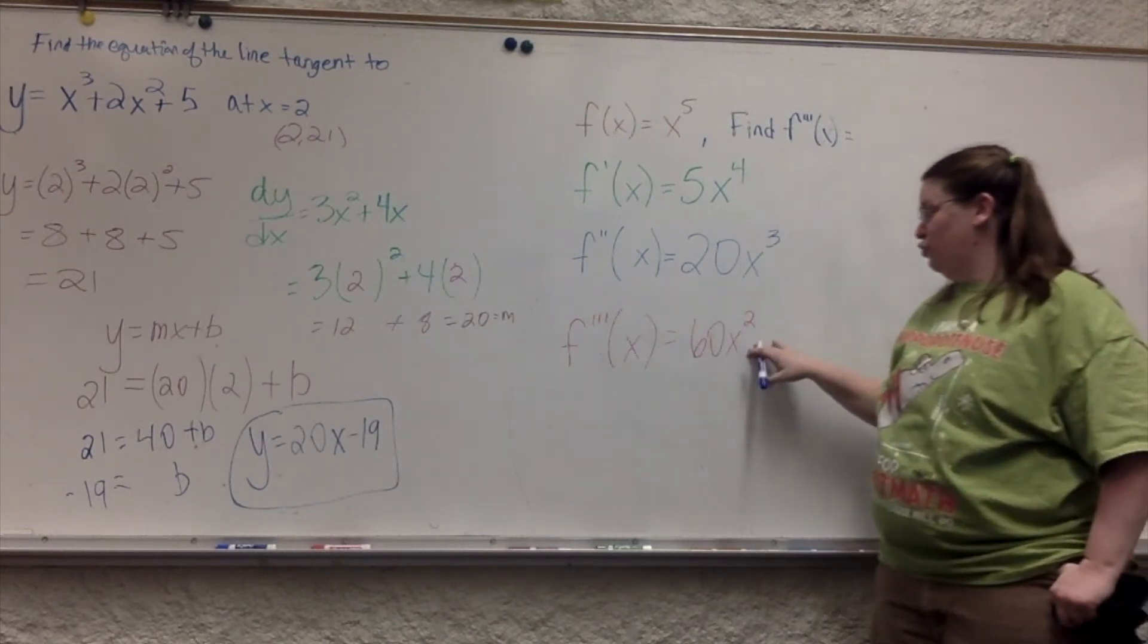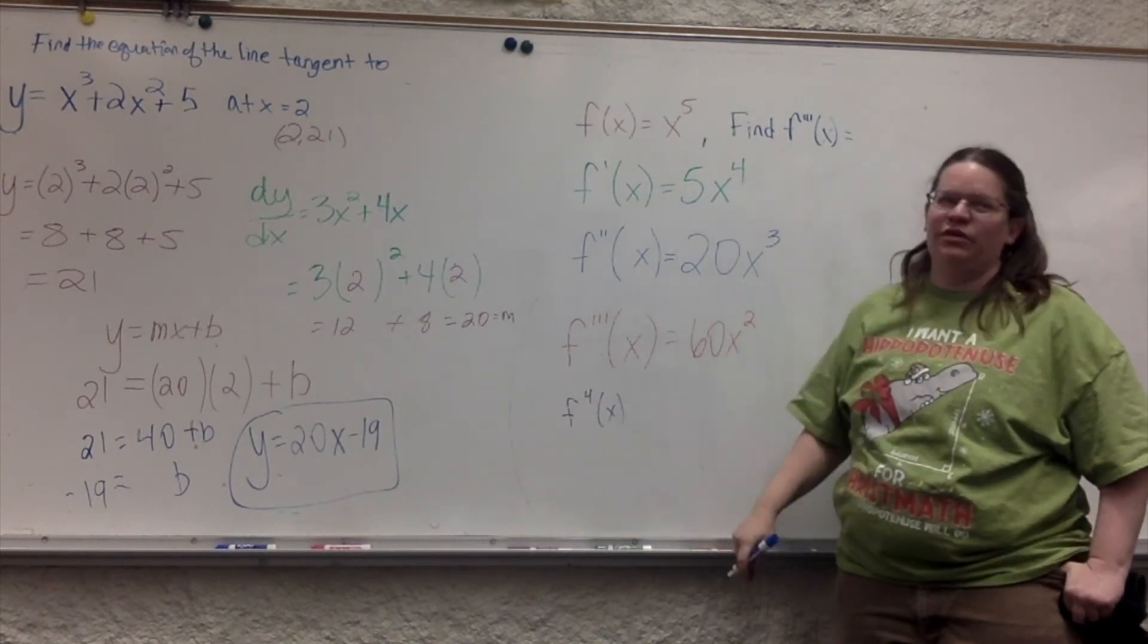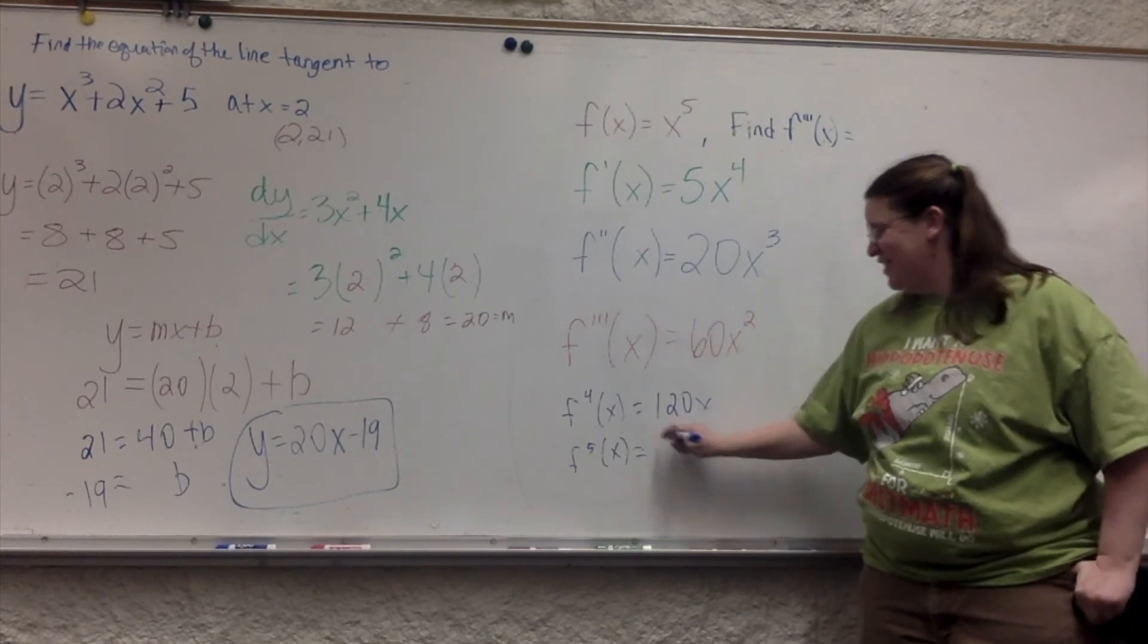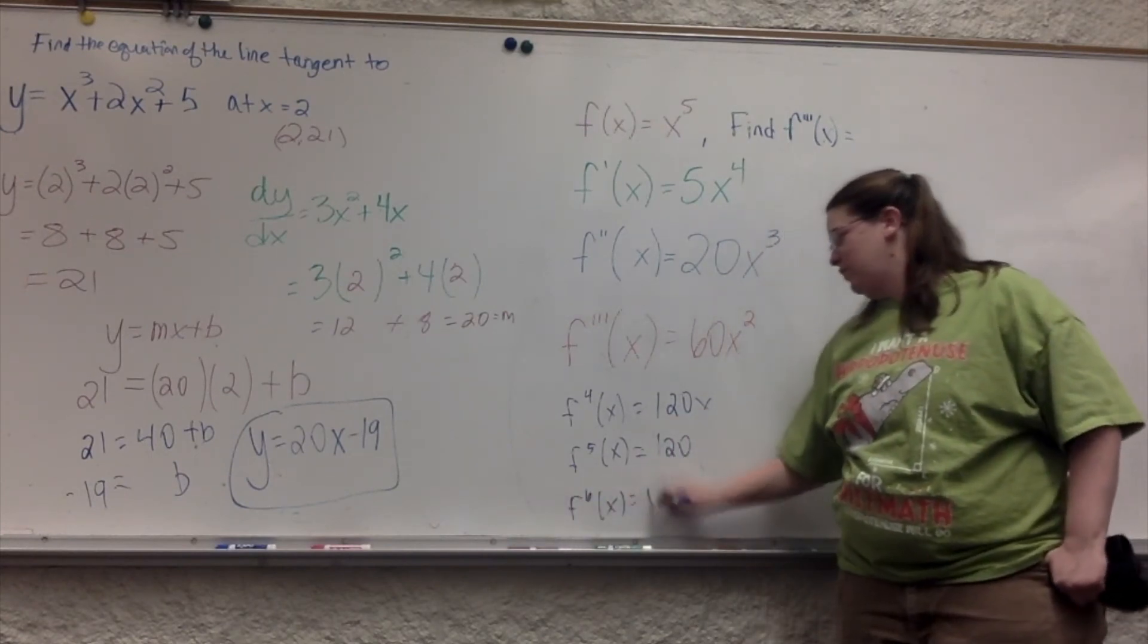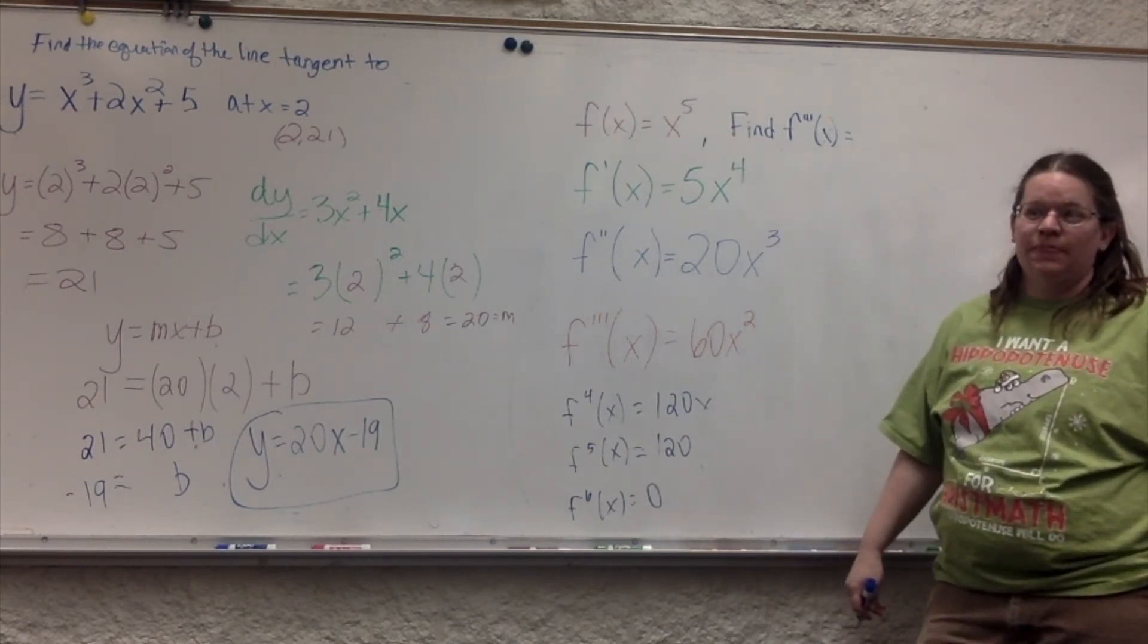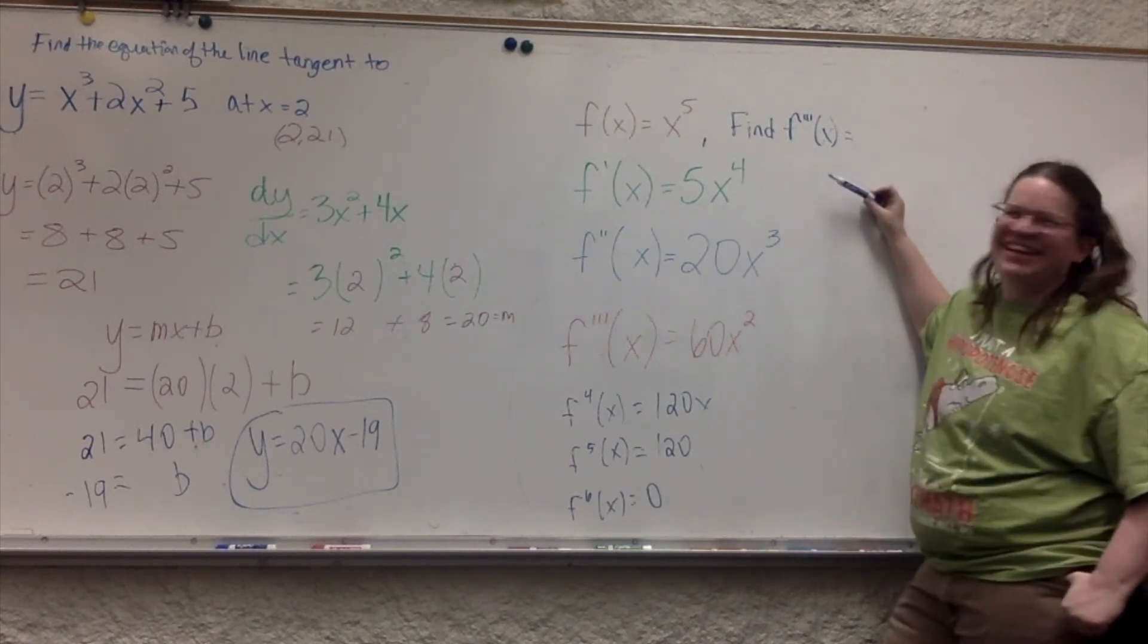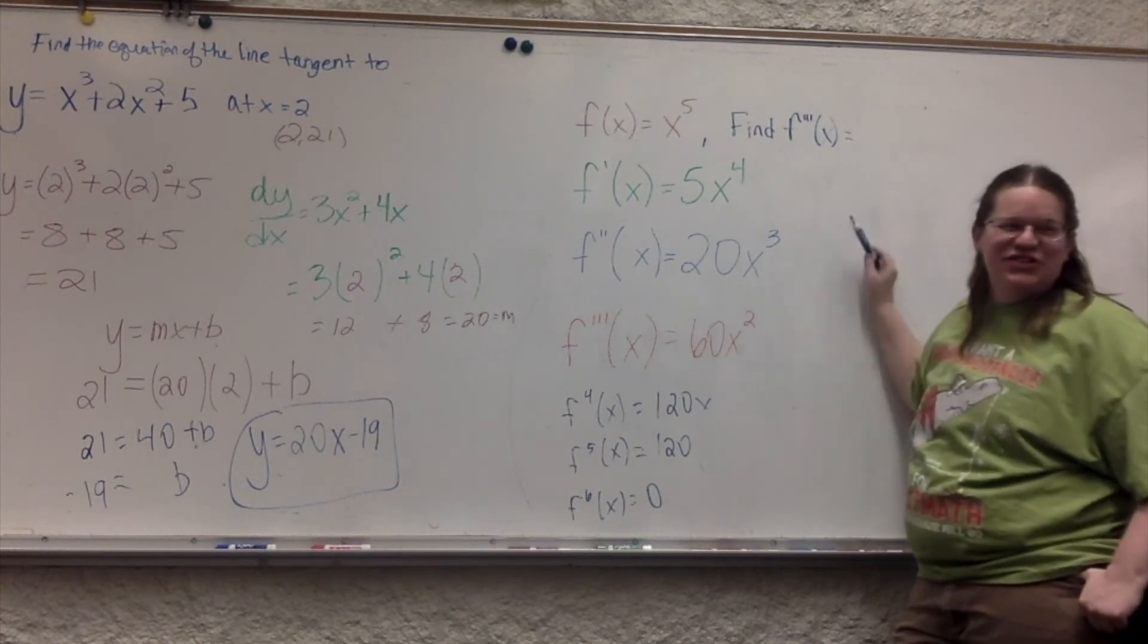But yes, eventually, what's the fourth derivative? It's going to be 120x. Then your fifth derivative? 120. And then the sixth derivative? This is zero. Also, will they ever make it go backwards? Yes, but that's integration. We're not going to write about it yet. What questions do you have about that?